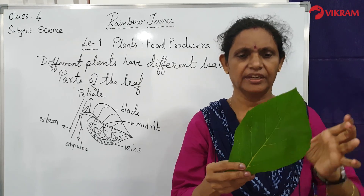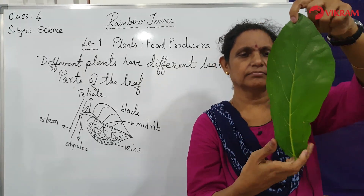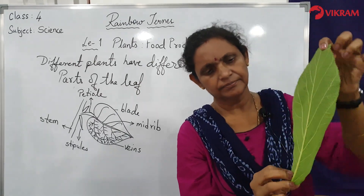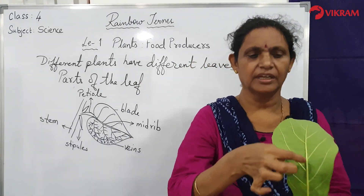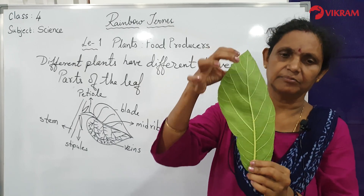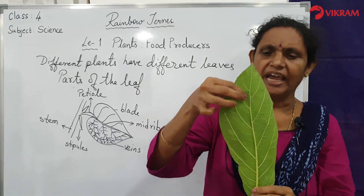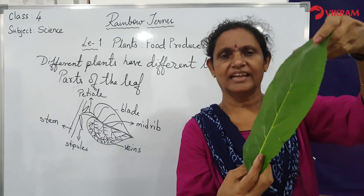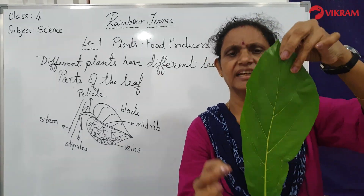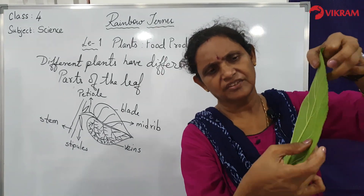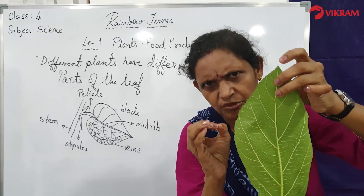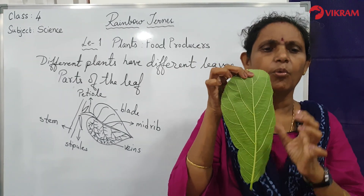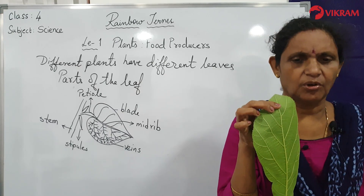The leaf blade has a mid vein. You can see the central mid vein — that is the main center area mid rib. From that vein you can see other smaller vein-like lines, and still smaller veins branching from those.